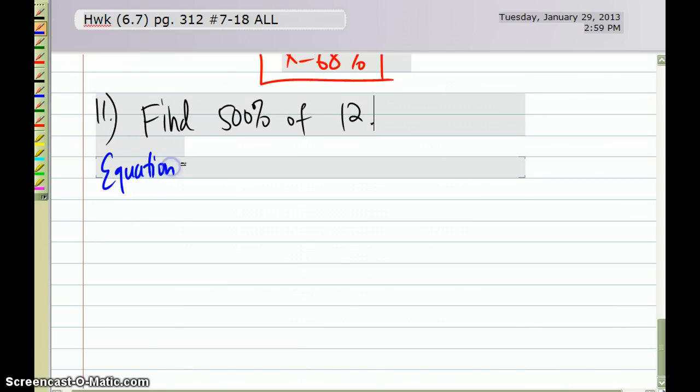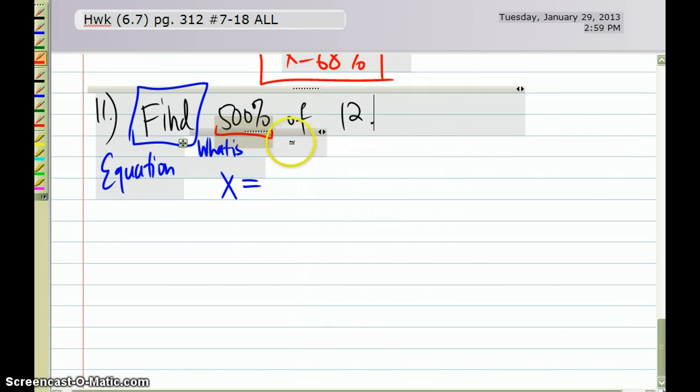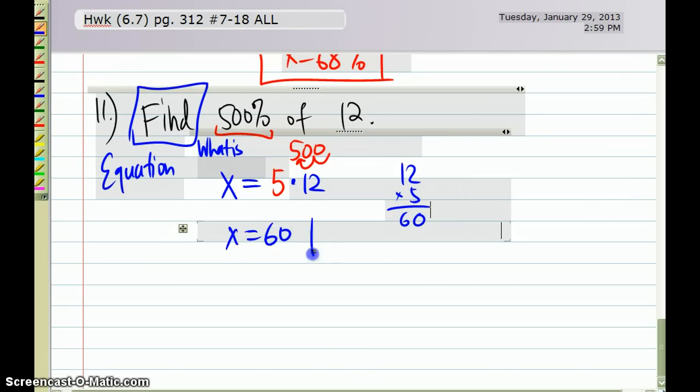Number 11, here's my equation, 'find.' Find means it's the same as saying 'what is.' It's like saying 'what is 500% of 12,' so 'what is' is x equals 500%. I'm going to change that to a decimal, so if I have 500, the decimal moves twice to the left, meaning I have 5, and then of 12, of 12 means times 12, so times 12. Simply, this is so easy, 5 times 12. Well, some of us can do that in our head, and if we can't, that's okay, but that would be 60, meaning 60 is 500% of 12.